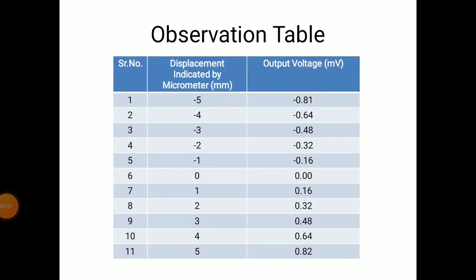From the experiment, the observation table has two columns: displacement indicated by micrometer in mm, and output voltage in millivolts. Serial number six shows displacement of zero, which is the null position, with output voltage 0.00 millivolts. Serial numbers one to five are left-side readings with negative displacement and negative output voltages. Serial numbers seven to eleven are right-side readings with positive displacements and positive output voltages.